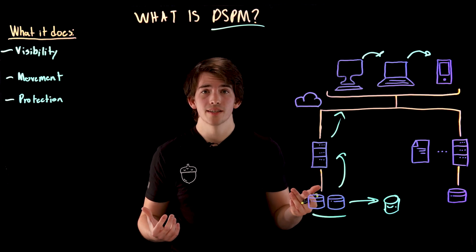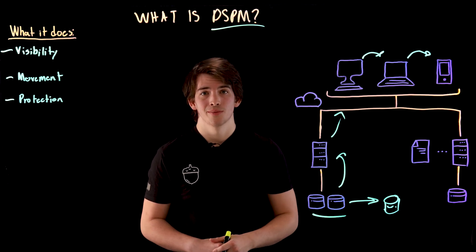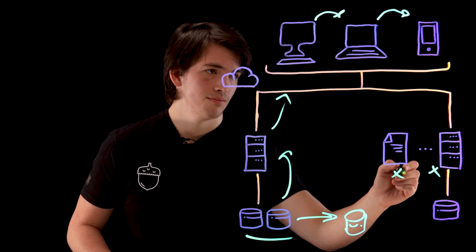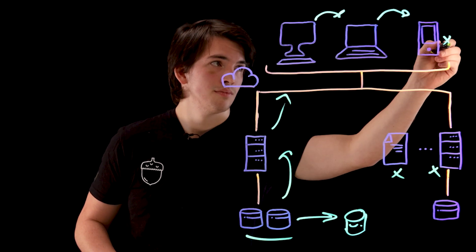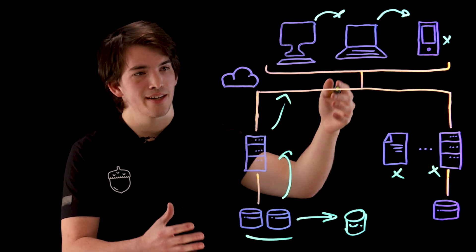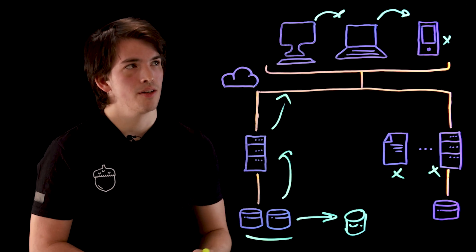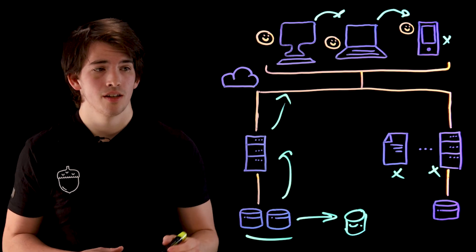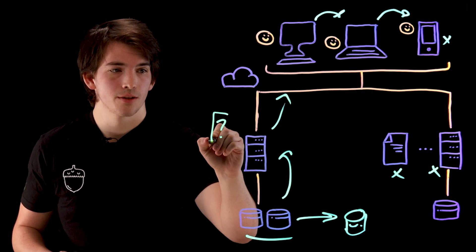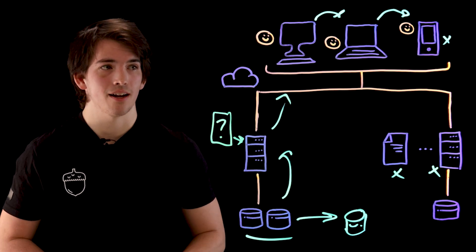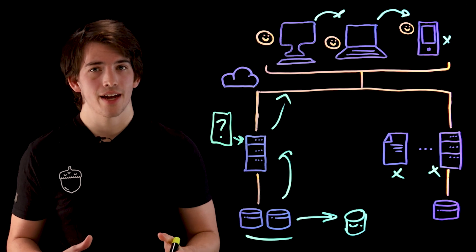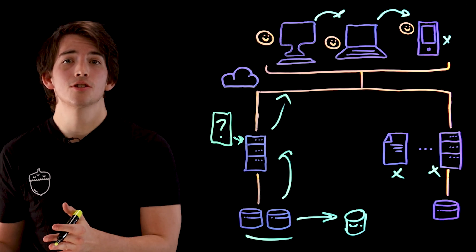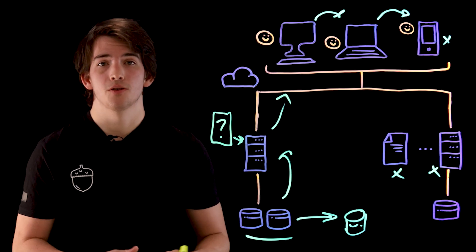Next problem: where does the data go? To know where the data goes, you need to know its access points. Sure, we have these connections in our topology diagram, but what about all of its users? Who has access to what? What kind of third parties do you interact with, and what access do they have? For that, you need to know the movement. And DSPM solutions help to analyze both potential and actual flows of data.